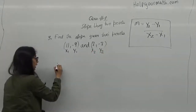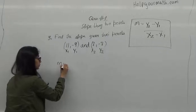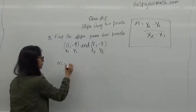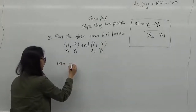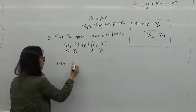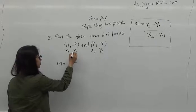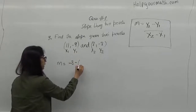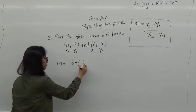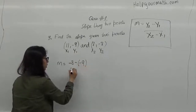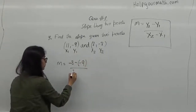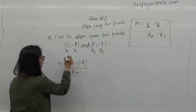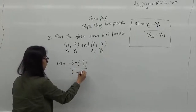So m equals y2, which is minus 8, minus y1, which is negative 9, over x2, which is 8, minus x1, which is 11.